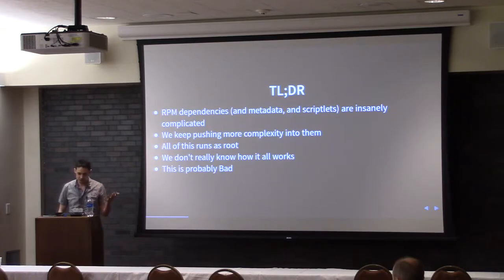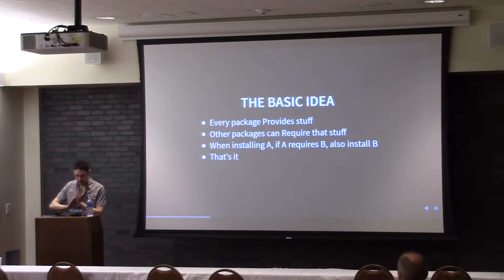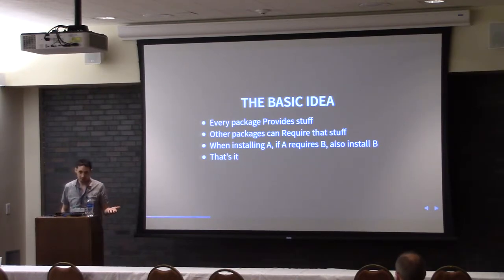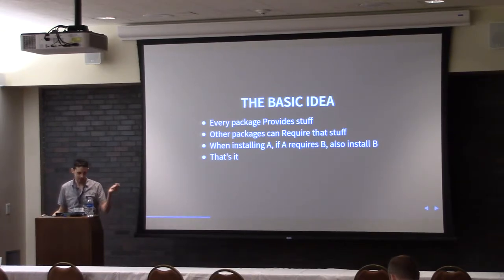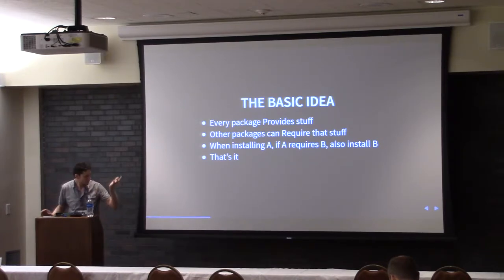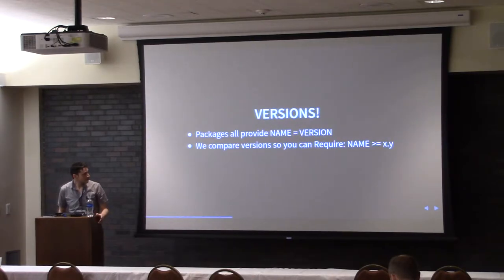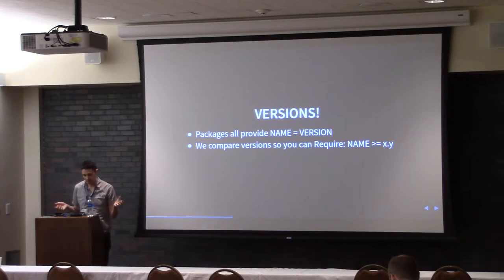Because we keep adding more and more features and we don't really know how they all interact. So, just to go through the basics of RPM: dependencies are a pretty good idea, right? You've got a software package of some sort — it has some capabilities. Packages should be able to require each other. Like, this thing uses this library, so if I install this thing, I also need to install this library. That's sensible. And then you get versions involved, and every package now implicitly provides itself at whatever version it is.